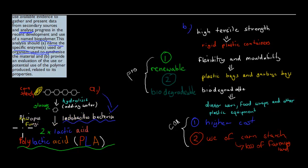Either can help us go from glucose to lactic acid, and then we polymerize to make polylactic acid. And B: provide an evaluation of the use or potential use of the polymer produced related to its properties. First we go for the properties. It has high tensile strength which allows us to make rigid plastic containers. It has high flexibility and moldability, so we can make plastic bags and garbage bags. And it's biodegradable, which means it's going to degrade by itself in a short period of time. We can make dinnerware, food wraps, and other plastic equipment that don't have to stay around for too long.